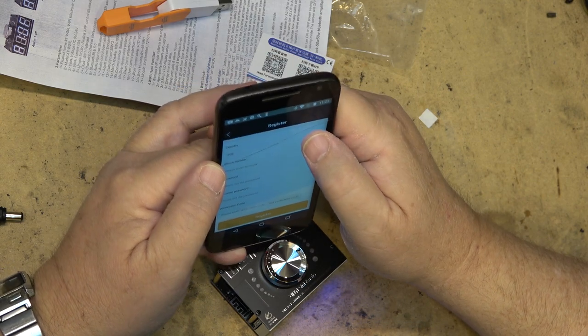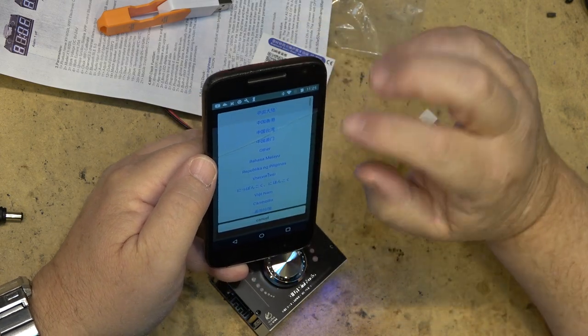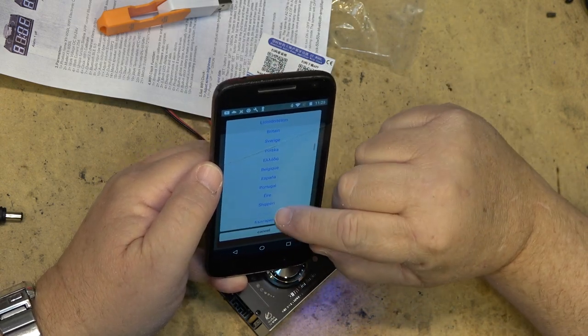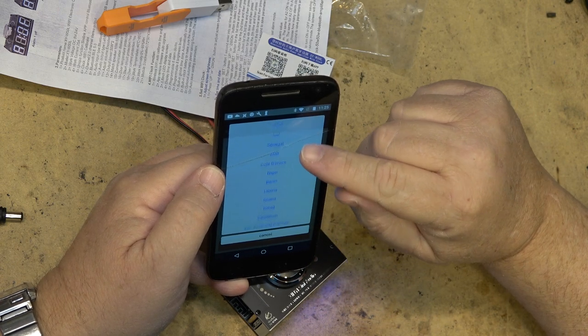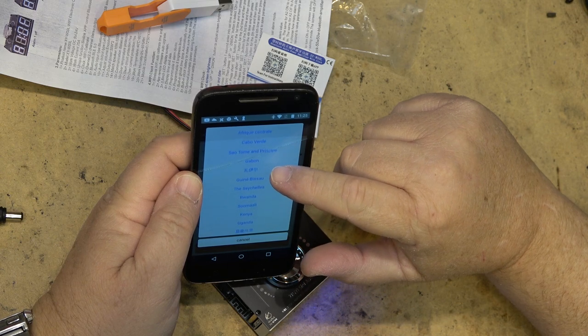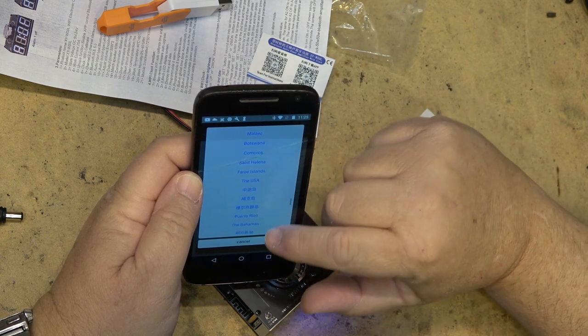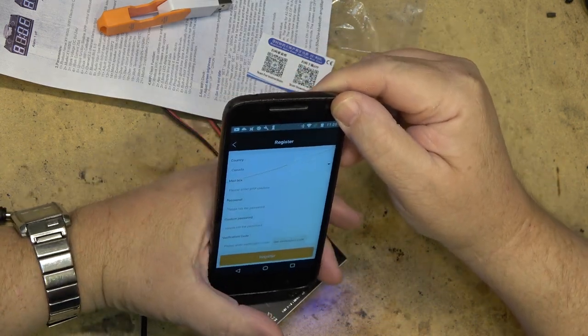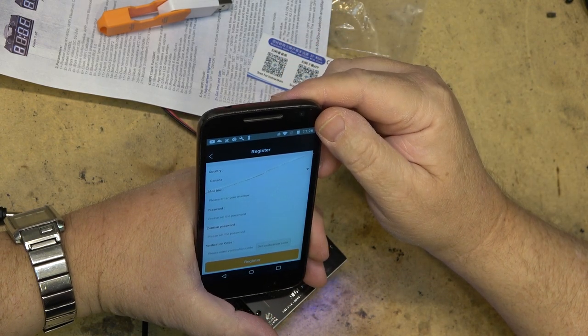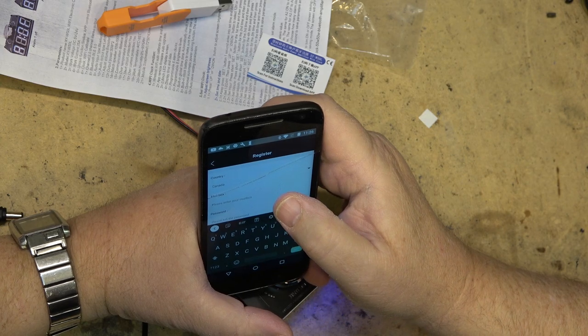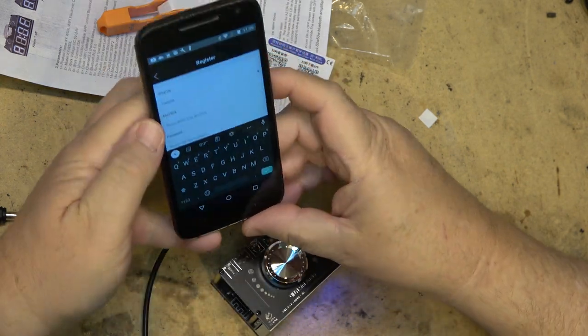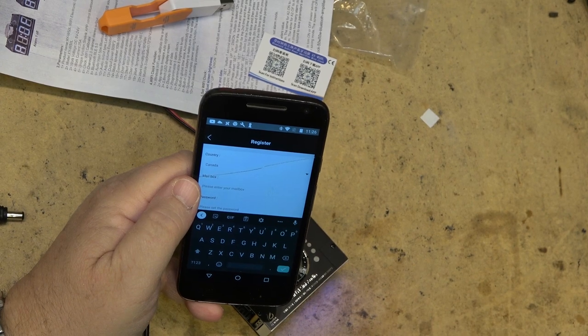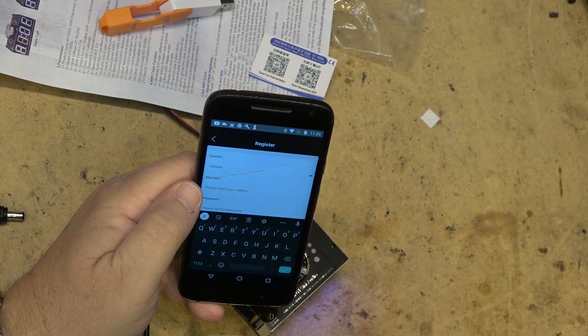It's going to ask for a phone number and this does not have a phone number. Let me find Canada in the list. Mailbox. I'll just use my garbage email account, my Hotmail account. Let me enter that info so I can get my registration code for this app.